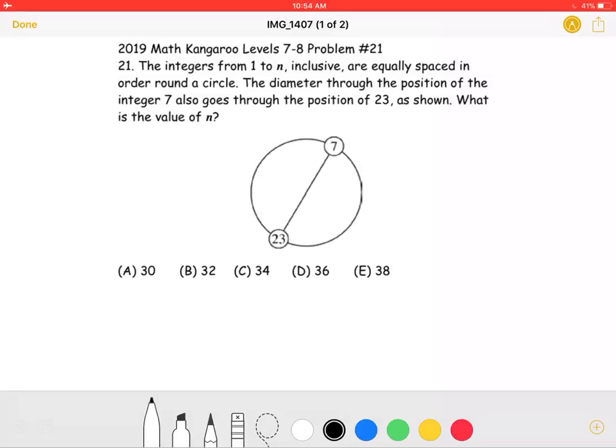are equally spaced in order around a circle. The diameter through the position of the integer 7 also goes through the position of 23, as shown. What is the value of n?